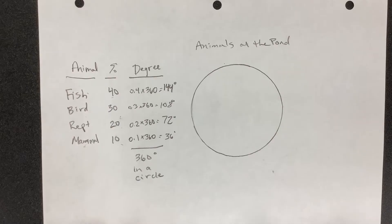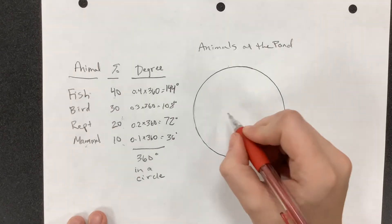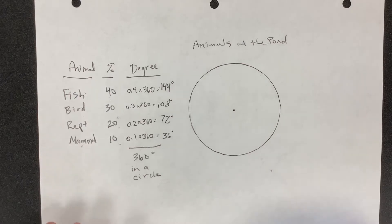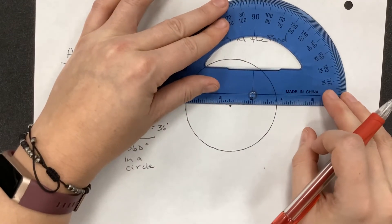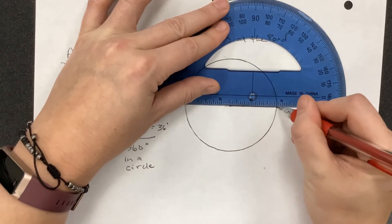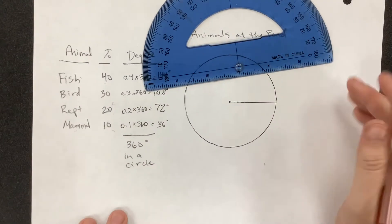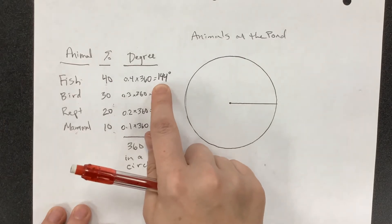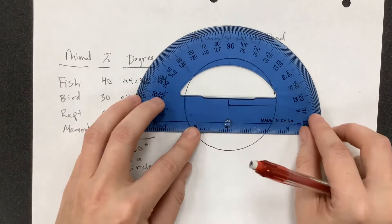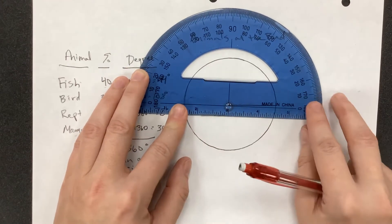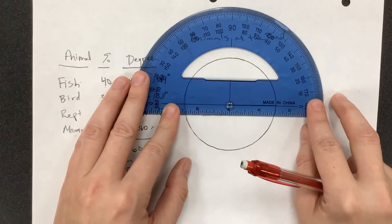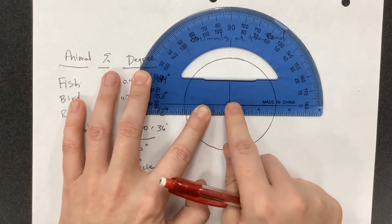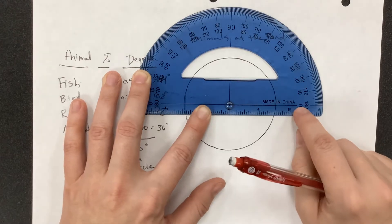Now it's time to use our protractor. You'll be given a circle. What you need to do is draw a dot at the center of the circle, then take your straight edge and draw a line from that dot to the outer edge of the circle. That's our starting line. Let's start with our largest piece — 40%, which is going to be 144 degrees. Line up the center point with the dot you drew, and then the line you drew will line up with 0. We start at 0 and we want to go to 144.